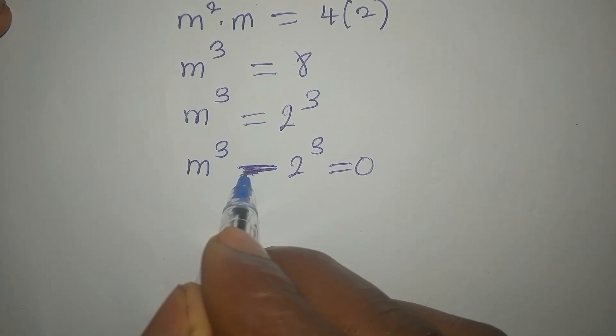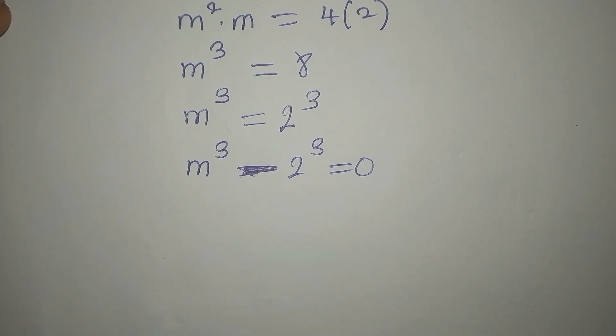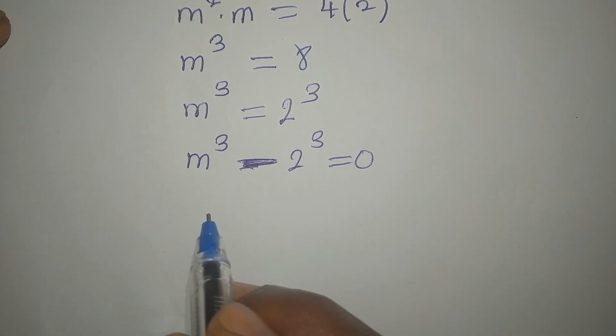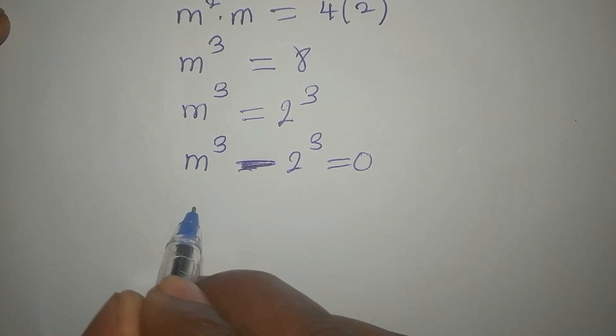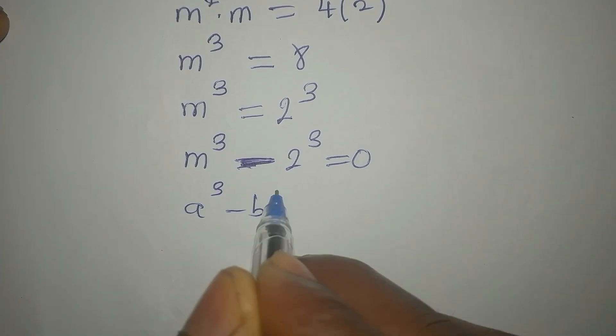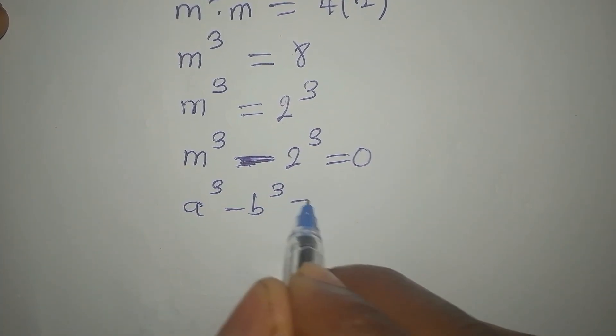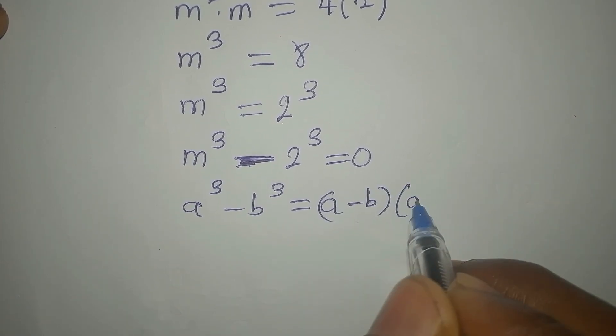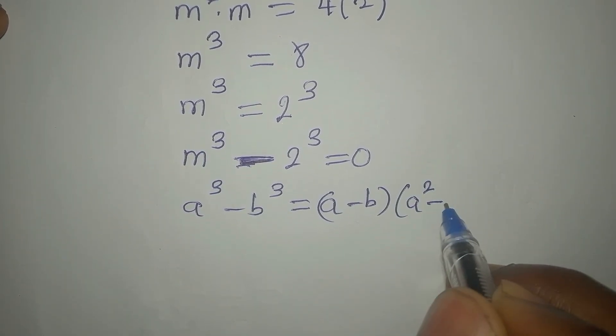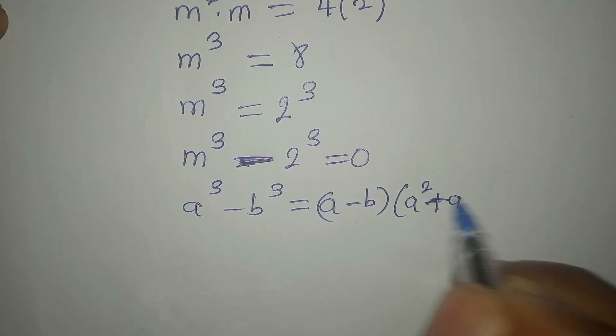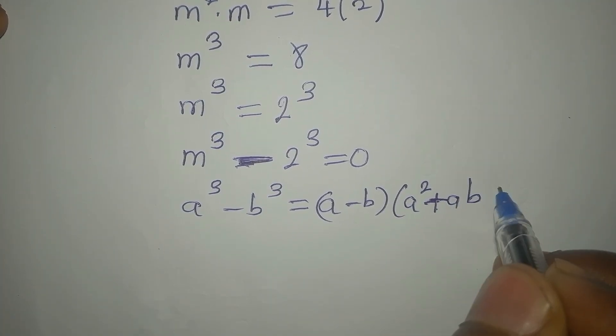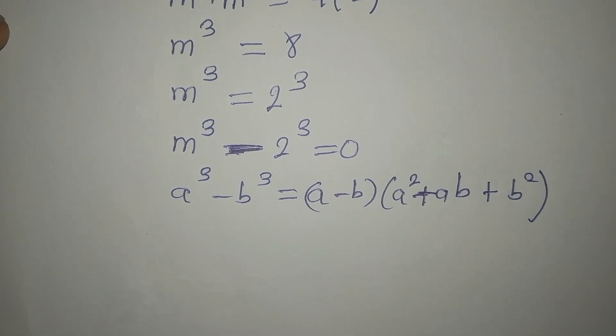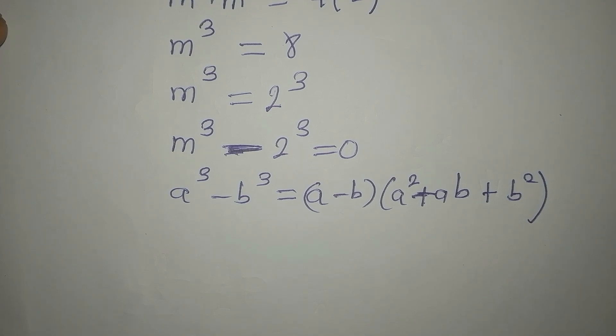So from here, what do we do? We are going to apply this standard. If you have a to the power of 3 minus b to the power of 3, this is the same thing as a minus b into a squared plus ab plus b squared. So this is the standard for difference of cube, just like we have for difference of two squares.